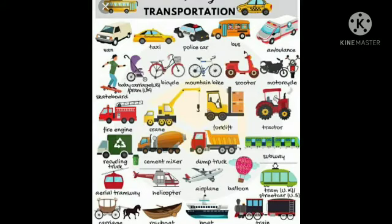For all types of transport, we need vehicles to carry people and goods. For example, car, two-wheeler (bike), three-wheeler (auto rickshaw), tractor, buses, and trucks are used for land transport. Boats are used for water transport. Aeroplanes and helicopters are used for air transport.